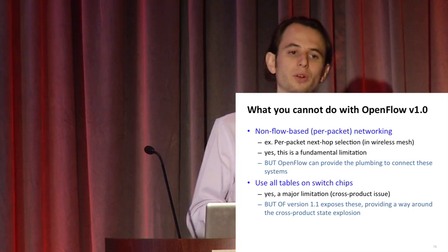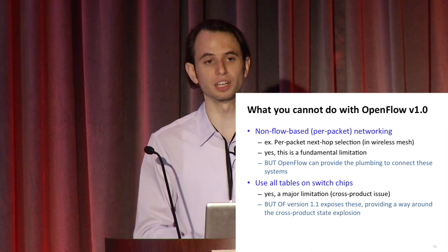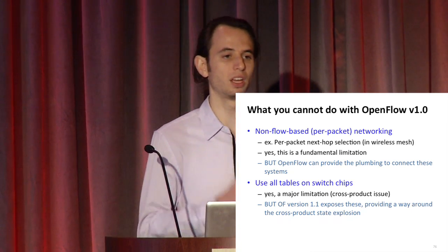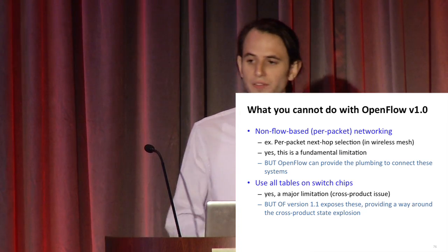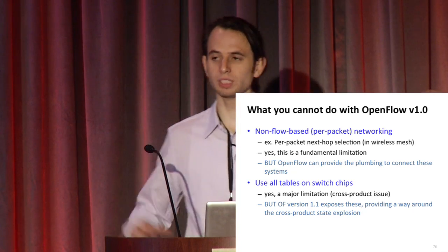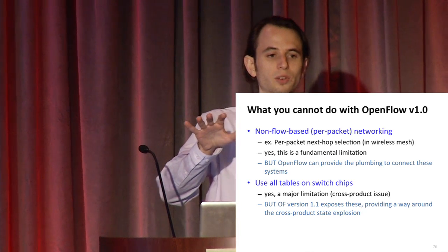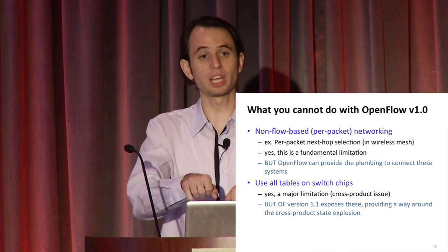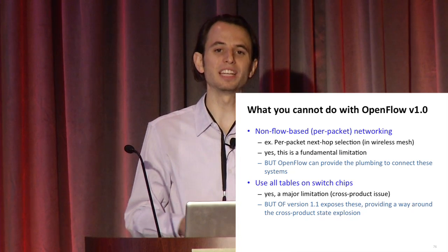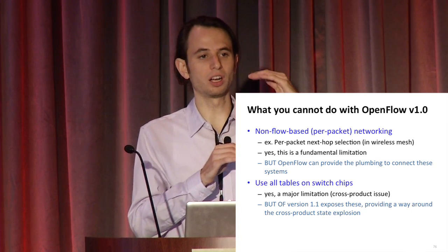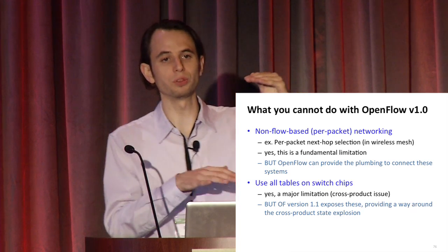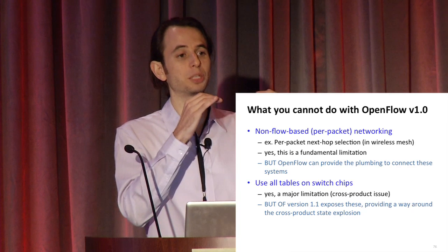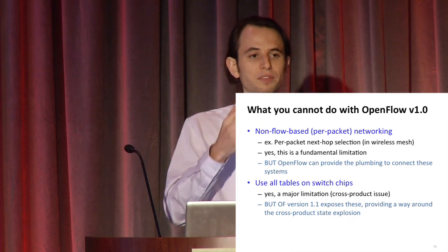OpenFlow 1.1 gives an interface to expose more details about what the porting pipeline should be, which lets the switch implementer map - say - a description with a layer 2 table, layer 3, and ACL onto those resources. It doesn't guarantee the switch will implement it, but at least provides an interface to get started. It avoids the cross-product problem you have with a single table: if you're doing things on layer 2 and layer 3 headers, you have to consider the cross-product of those two and push that into a flow table. OpenFlow 1.1 gives you a multi-stage pipeline with that flexibility.